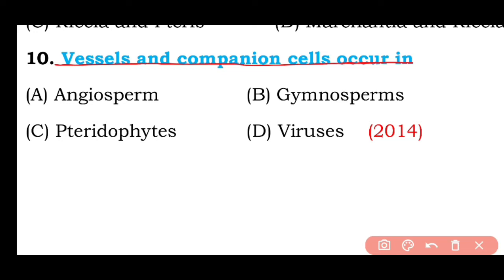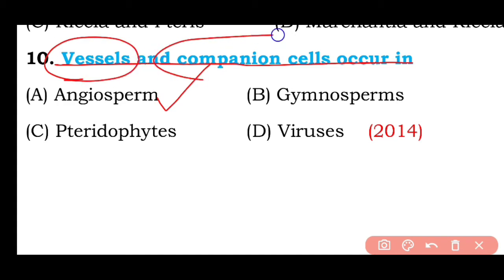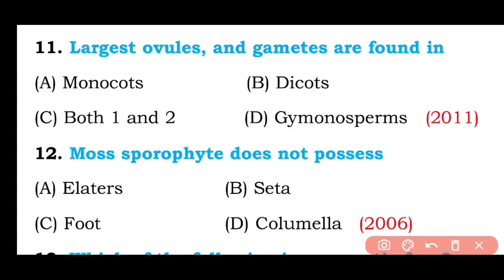Question number ten: Vessels and companion cells occur in angiosperms, gymnosperms, pteridophytes, or viruses? The correct answer is option A — angiosperms have both vessels and companion cells.